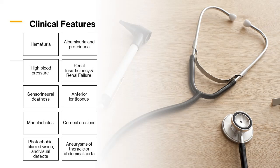The most common features are as follows: blood in the urine, usually microscopic hematuria but sometimes it may be gross; loss of albumin and other proteins in the urine, called albuminuria and proteinuria. It is frequently associated with high blood pressure due to progression of renal disease, and gradual loss of renal function resulting in end-stage renal disease.